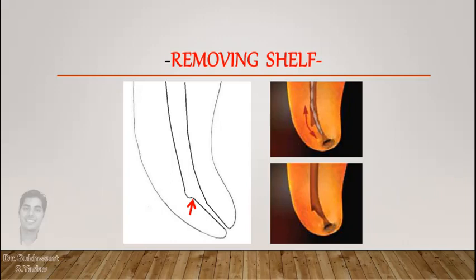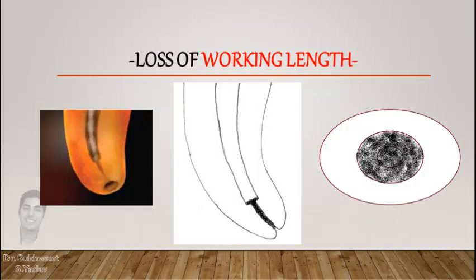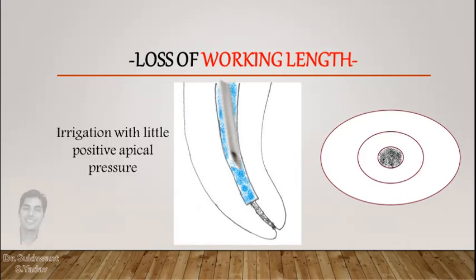Rotary NiTi files may not go easily beyond the ledge, so first prepare the canal with hand files, then try with rotary. Loss of working length during preparation can be another cause of blocked canals. Lots of debris get collected at the apical end of the preparation and it will lead to blockage. Do copious irrigation with little apical pressure to wash out all the loose debris.